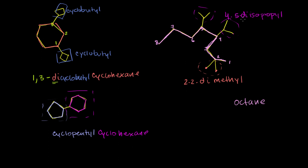Now we have to figure out the order to write it in. You ignore the 'di' or 'tri' out front and just look at them in alphabetical order. We have an 'I' for isopropyl and an 'M' for methyl. So we write isopropyl first. I comes before M. So if we write the whole thing, this is going to be 4,5-diisopropyl, 2,2-dimethyl octane.